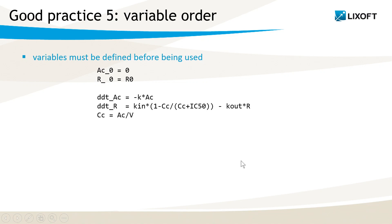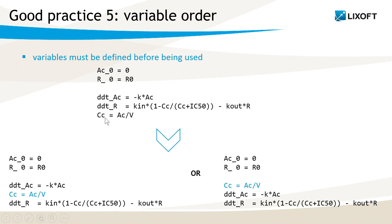And to finish, I would like to mention that each variable you use in the ODEs must first be defined. So for instance, in this piece of code, I use CC here, but CC is defined only here. So this will lead to an error. The solution is to reorganize the equation, either in this way, where CC is defined here using AC, and CC is then used here, but it is also possible to write it like this. Here, AC is authorized because it has been defined in the initialization here.